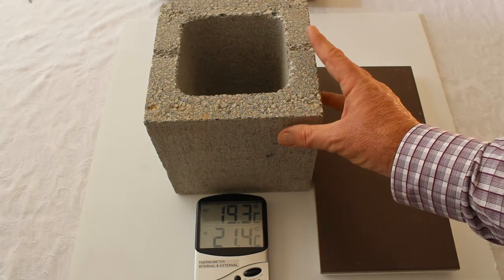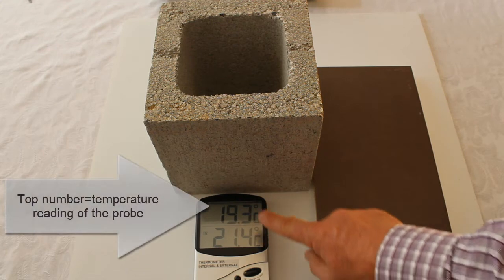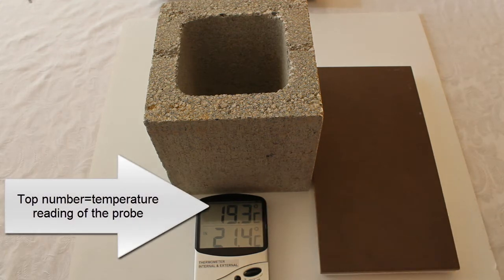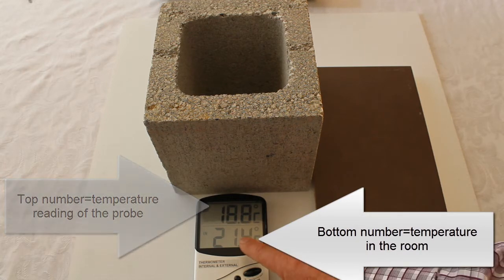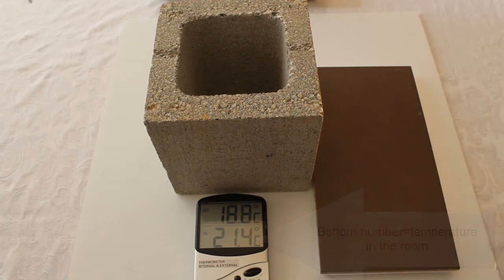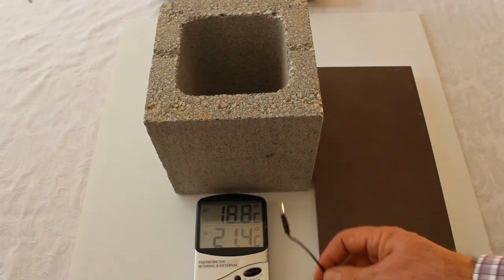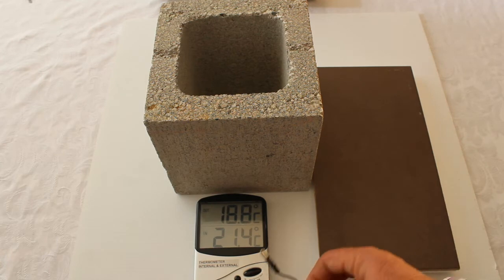I have a thermometer here. The top reading is the exterior reading and the bottom one is interior, meaning that's the ambient temperature in the room right now. This is a probe which is connected to the thermometer. There you can see the wire or the cable.